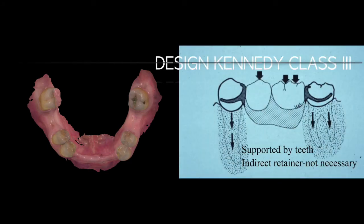Designing Kennedy class 3 is very different from designing class 1 and 2. Kennedy class 3 has anterior and posterior teeth remaining, meaning the metal framework is supported by these remaining teeth front and back. Because of the presence of anterior and posterior abutments, the bite force applied onto the prosthesis transfers into these roots, and therefore the prosthesis is fully tooth-supported—which is very unique compared to class 1 or 2.